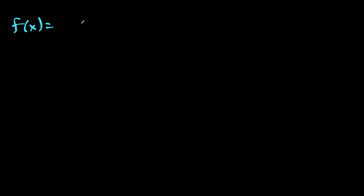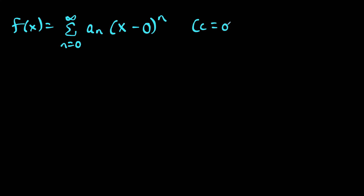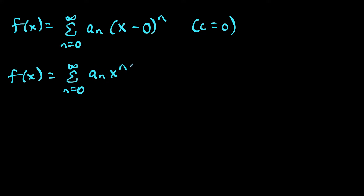To derive the formula for a McLaurin series, we're going to start with the power series formula from the previous page: the series from n equals 0 to infinity of a sub n times x minus c to the n power. But remember, a McLaurin series is centered at 0, so c is equal to 0, which simplifies this to the series from n equals 0 to infinity of a sub n times x to the n.